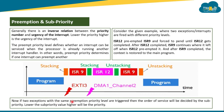If two exceptions with the same preemption priority level are triggered — say ISR 9 and ISR 12 both have the same preemption priority — then the order of service is decided by the sub priority. Again, a lower sub priority value means higher priority of execution. Understanding preemption and sub priority is important when implementing multiple interrupts in your code.